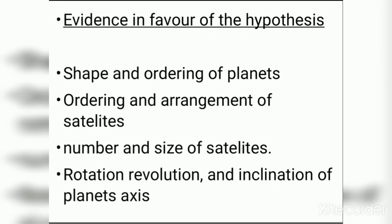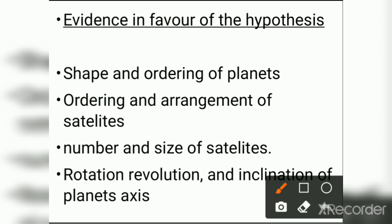Evidence in favor of this hypothesis: First, regarding the shape and ordering of planets — planets formed from the condensation of incandescent gaseous matter in the middle portion of the filament were bigger than those from the tapering ends, matching the present arrangement of planets. Second, regarding the ordering and arrangement of satellites — there is almost the same type of arrangement of satellites around the planets as the arrangement of planets around the Sun.